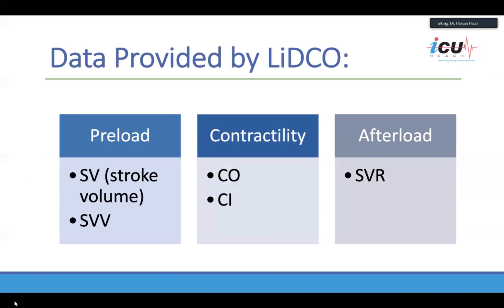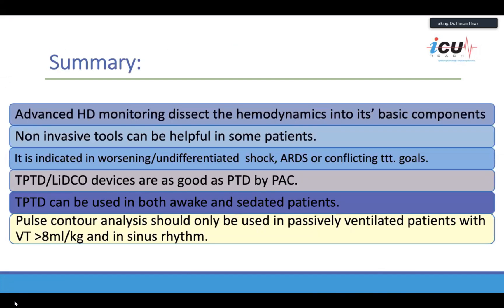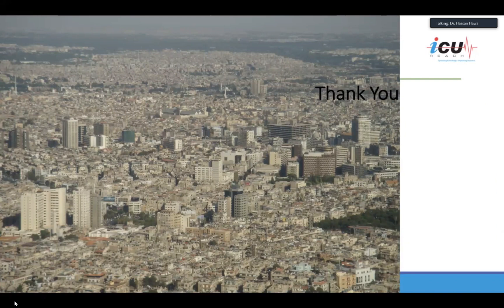In summary: advanced hemodynamic monitoring dissects hemodynamics into its basic components. Non-invasive tools can be helpful in some patients. It is indicated in worsening or undifferentiated shock, ARDS patients, conflicting therapeutic goals, subarachnoid hemorrhage patients, and optimization in major surgeries. Transpulmonary thermodilution and LIDCO devices are as good as the PA catheter. Transpulmonary thermodilution can be used in both awake and sedated patients. Pulse contour analysis should only be used in passively breathing patients with tidal volume of 8 ml/kg and in sinus rhythm.